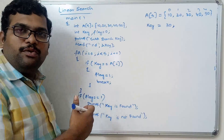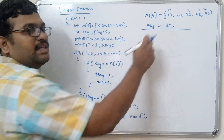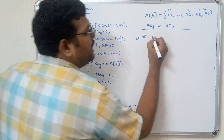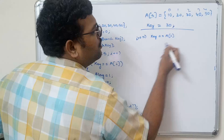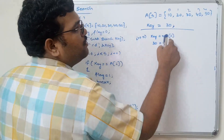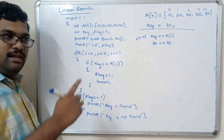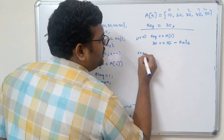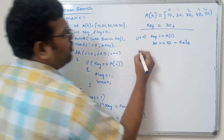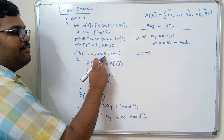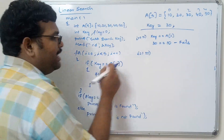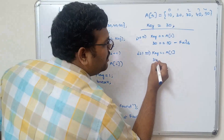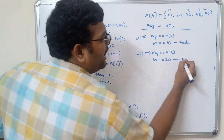Let us trace this program so you can clearly understand it. For i equal to 0 in the first iteration: key equals a[0], that is 30 equals 10 — the condition fails. There is no else path, so i is incremented. i equals 1, and 1 is less than 5, so the condition is true. Again key equals a[1], which is 20 — 30 equals 20 is false, so the condition fails again.